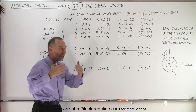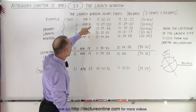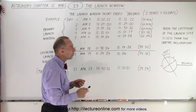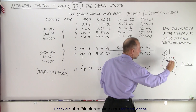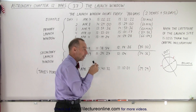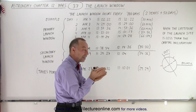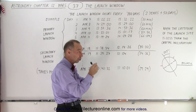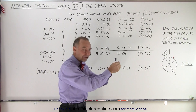As time progresses through the launch window, notice that those launch times change. You need to send it a little bit earlier each time, because the position where you'll be on the Earth relative to the ecliptic, where the Earth is in its orbit around the Sun, and where Mars is — all of these shift things a little bit. So you have to launch at a slightly different time to make it just right, so you rendezvous with Mars at the right location at the right time.